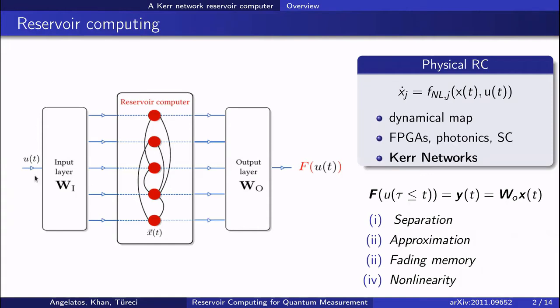Reservoir computing is a computational framework for processing time-dependent data, where we compute some desired function f of an input signal or its history. This is done by feeding the signal into a reservoir, which we take to be a physical dynamical system. Some successful recent platforms are FPGAs, photonic networks, and superconducting circuits. Here we're going to use a lattice of Kerr oscillators.